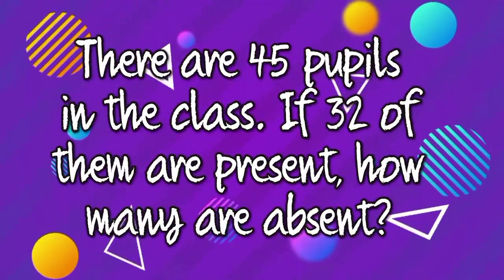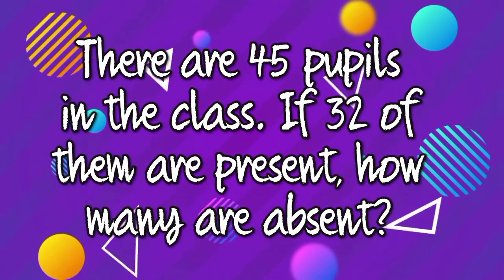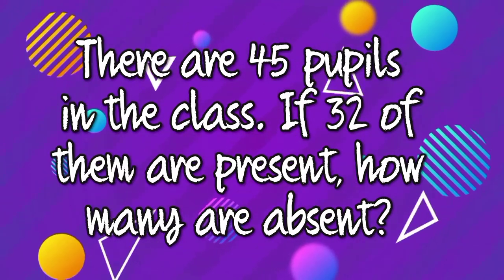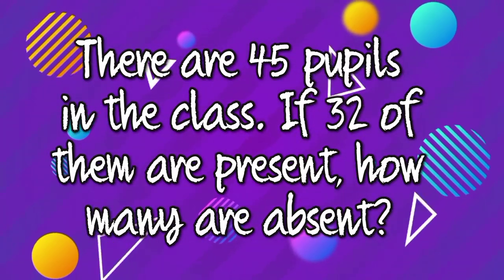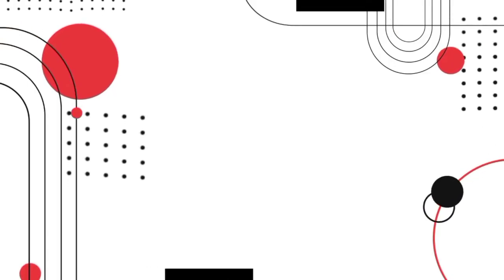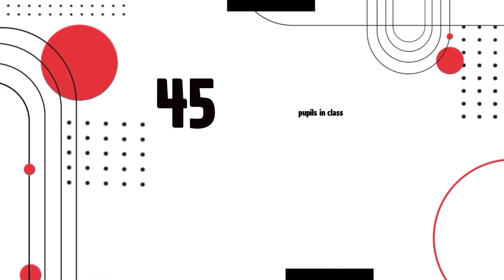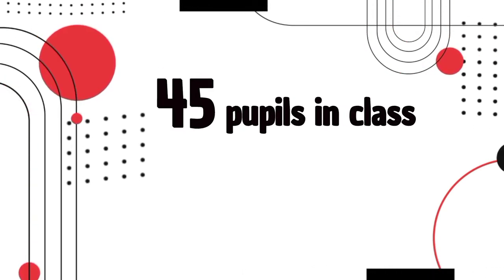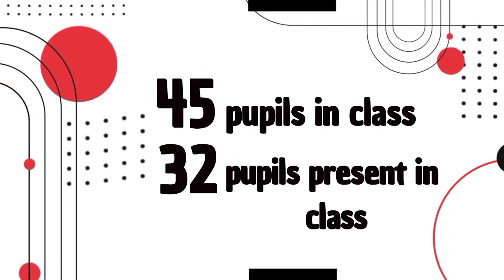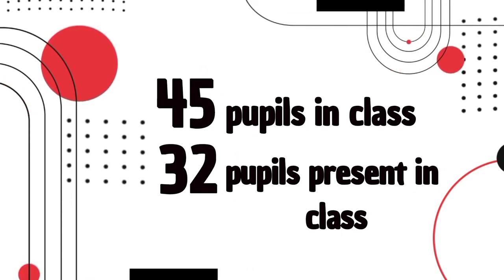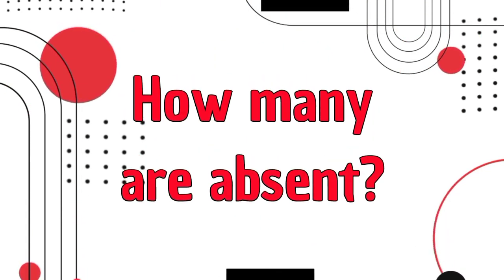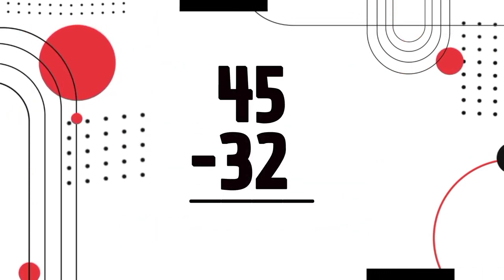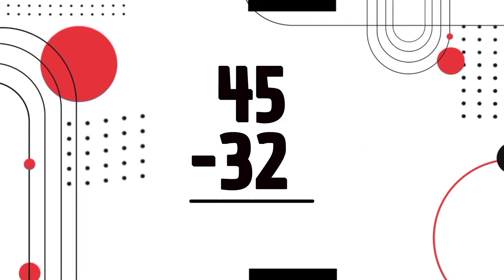Let's try to do an example. There are 45 pupils in the class. If 32 of them are present, how many are absent? The given numbers are 45 pupils in class and 32 pupils present in class. The question is, how many are absent? So we need to subtract 32 from 45.